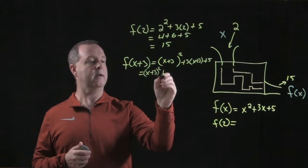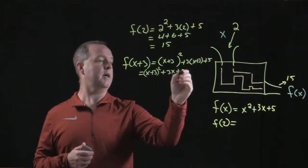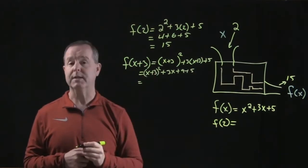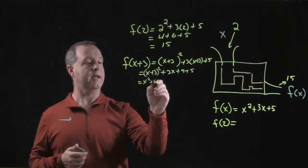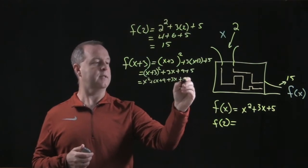x plus 3 squared, plus 3x, plus 9, plus 5. Let's collect like terms. x plus 3 squared, I can expand that out, and that becomes x squared, plus 6x, plus 9, plus 3x, plus 9, plus 5.